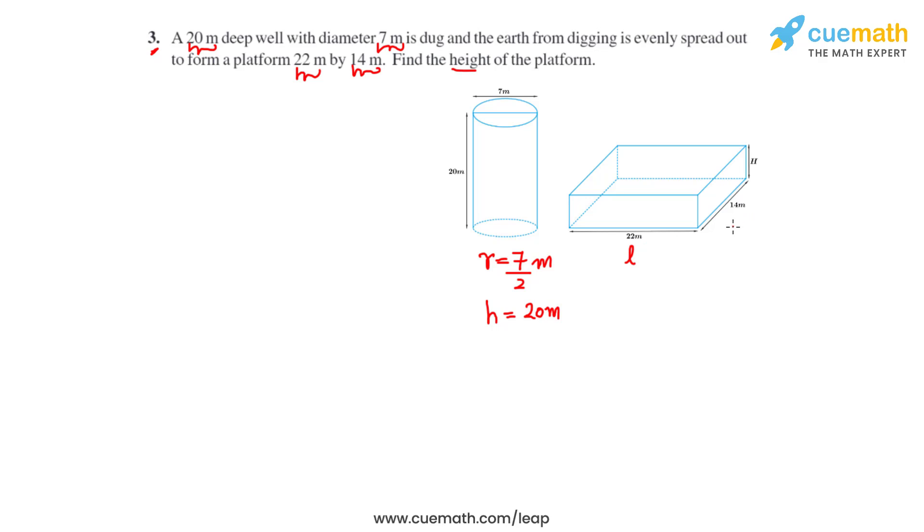And height capital H, which we have to find. So we know that the volume of the soil which is dug out from the well will be equal to the volume of the cylinder.